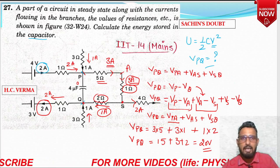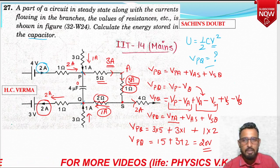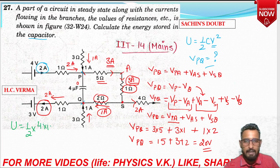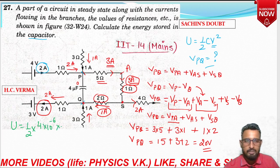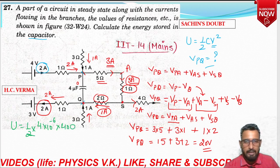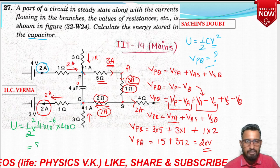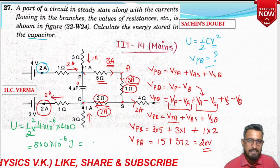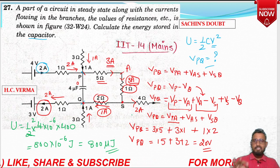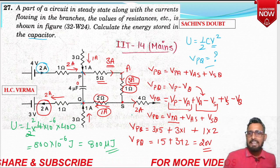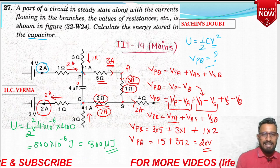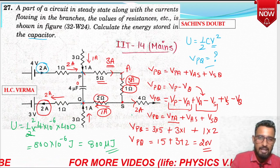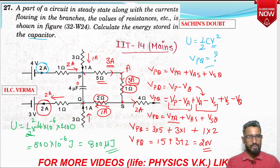Energy stored in the capacitor = ½CV² = ½ × 4×10⁻⁶ × (20)² = ½ × 4×10⁻⁶ × 400 = 800×10⁻⁶ joule = 800 microjoule. I hope Sachin's doubt is now clear, and many other students' as well.